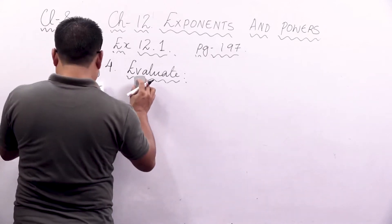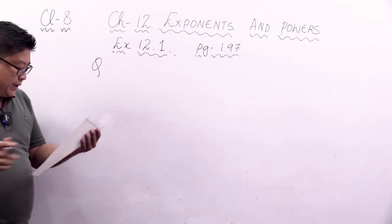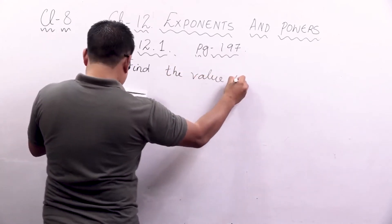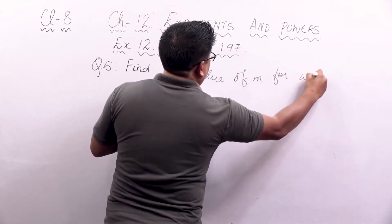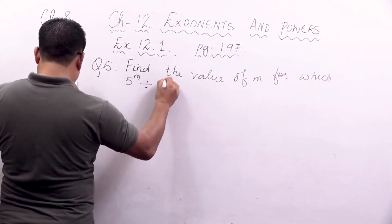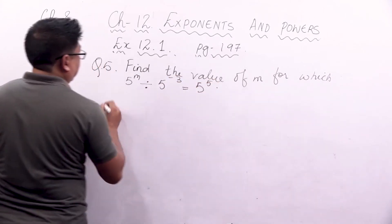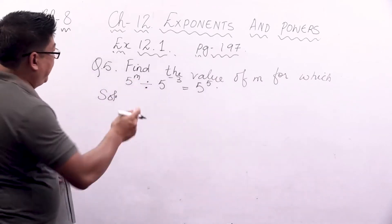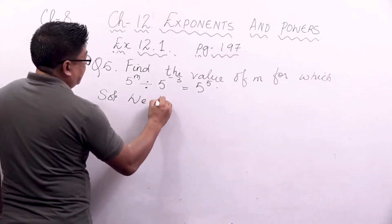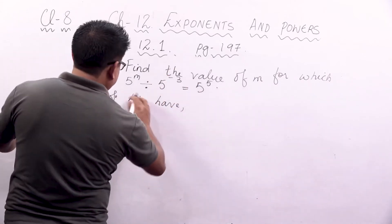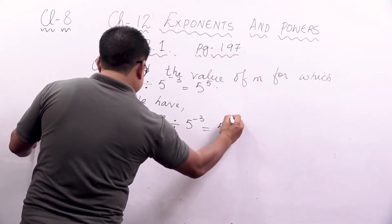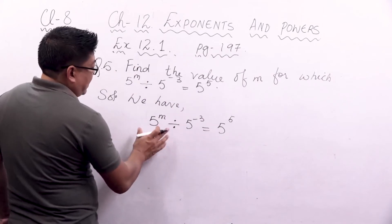The next question is question number 5. Find the value of M for which 5 to the power M divided by 5 to the power minus 3 is equal to 5 to the power 5. So we have to find the value of M. I will write the same expression and start from there.